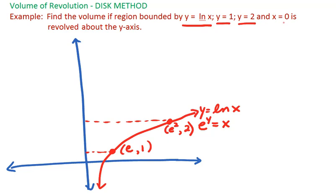We're also bounding our region by the y-axis, so we can shade the region that we are revolving. We are revolving around the y-axis, so let's get its mirror image on the other side, something like this.